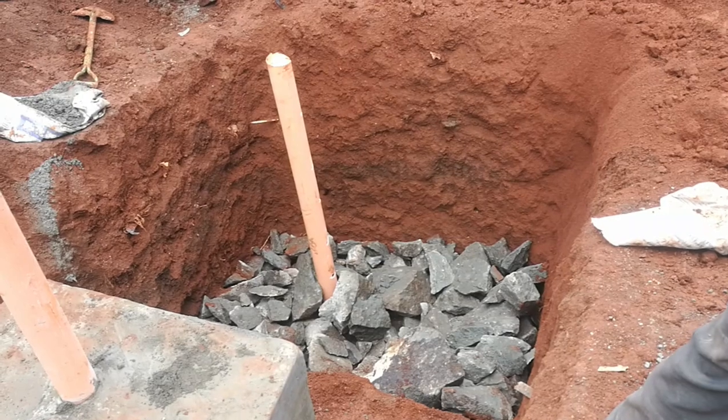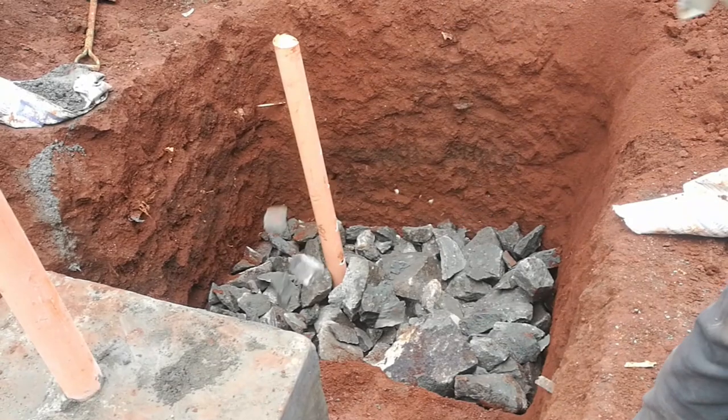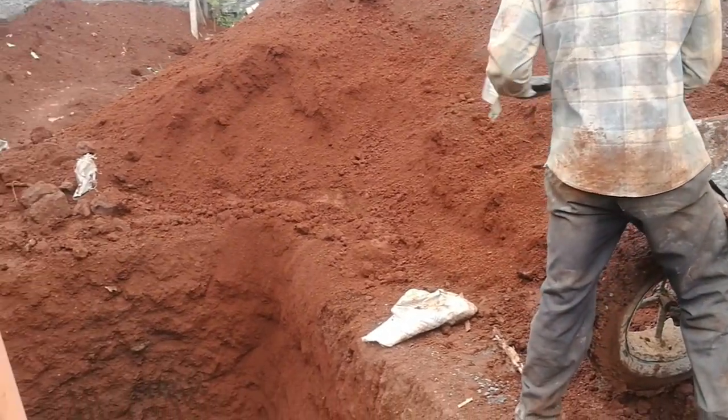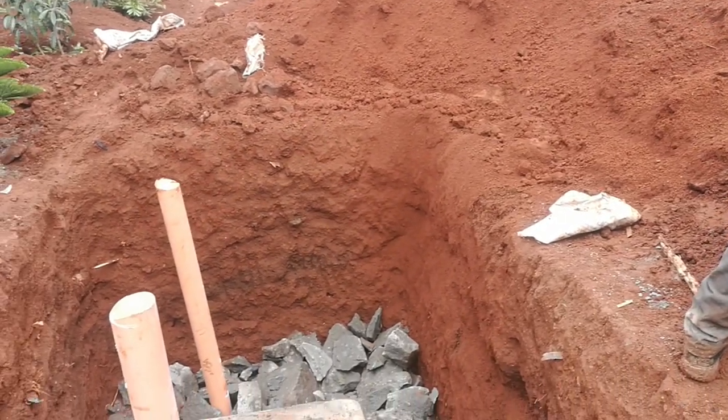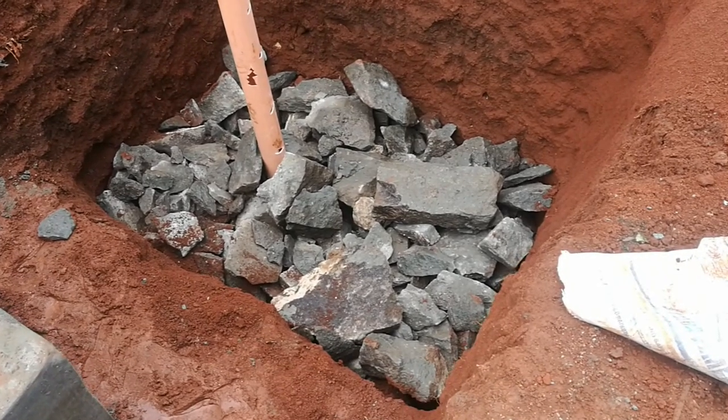A soak pit, also known as a leechway or soakaway, helps to manage the effluent generated in the biodigester. The function of a soak pit is to allow the liquid waste from the biodigester to gradually percolate into the surrounding soil, where it undergoes further treatment and is absorbed.